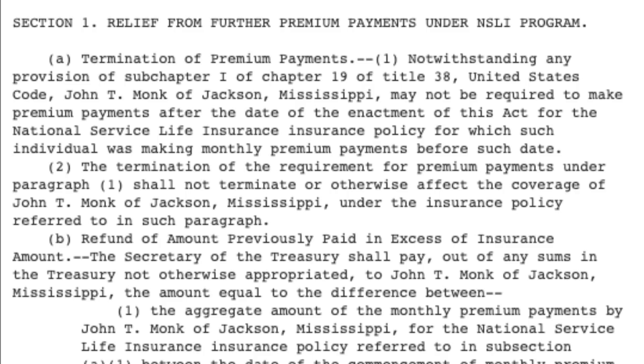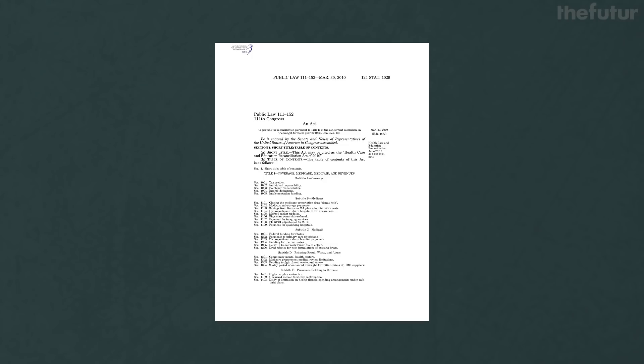The United States government used to use the typeface Courier, which is a shorter font with less contrast between the letters, making it harder to read. And if you're about to read something from the U.S. government, it helps if it's easy to read.